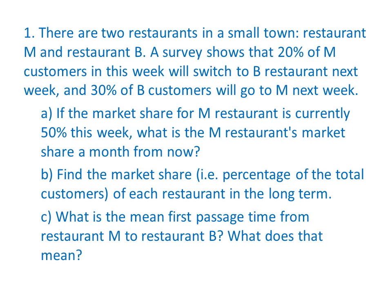Obviously, this is a Markov chain question. The very first thing we have to do when we want to answer this question is to find the random characteristic of interest. And here, the random characteristic of interest is the restaurant that people are choosing each week.